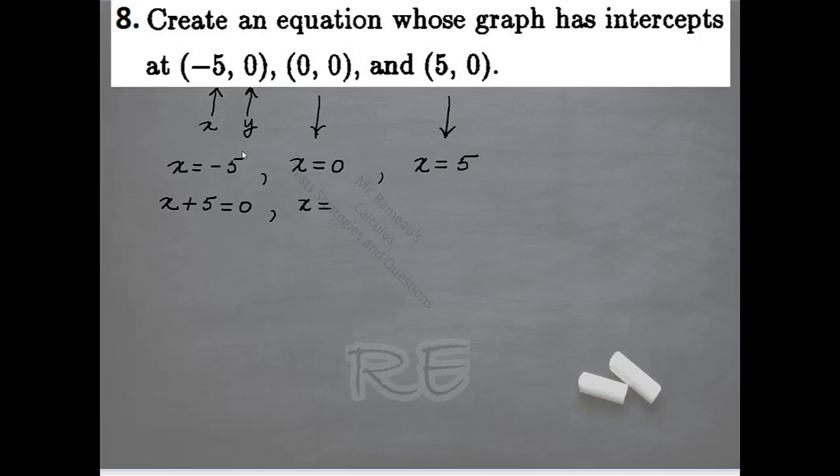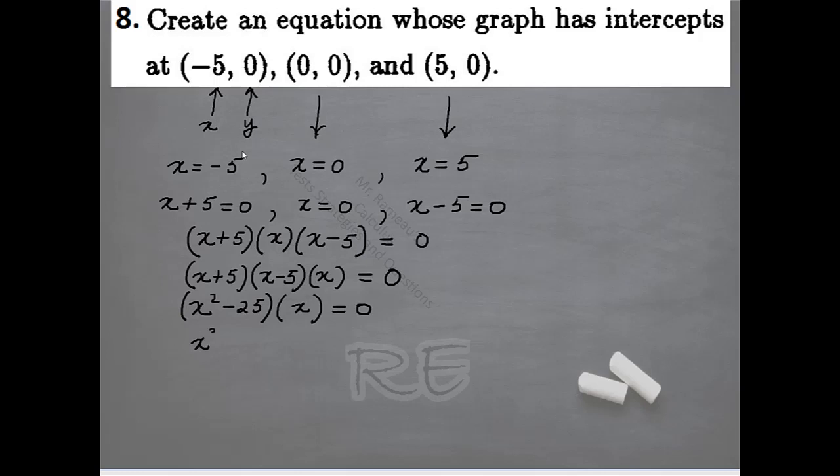X plus 5 equals 0, x equals 0, and x minus 5 equals 0. We can rearrange them because if we put x plus 5 and x minus 5 together and multiply them, we get a difference of two squares. It's going to be x squared minus 25 times x is equal to 0, and the final answer is x cubed minus 25X.